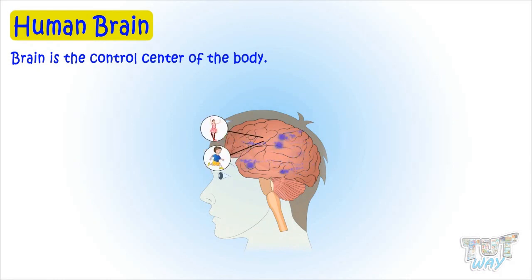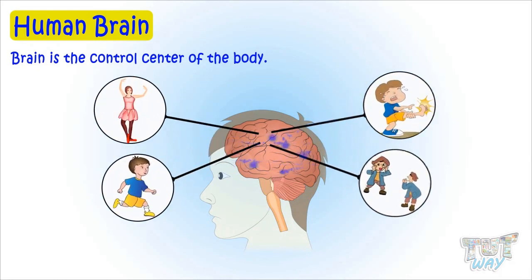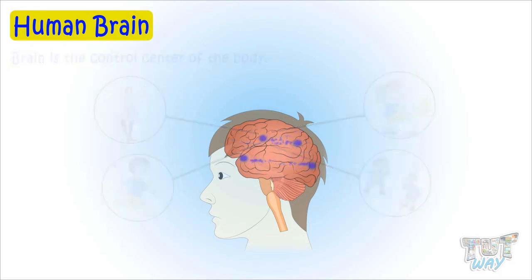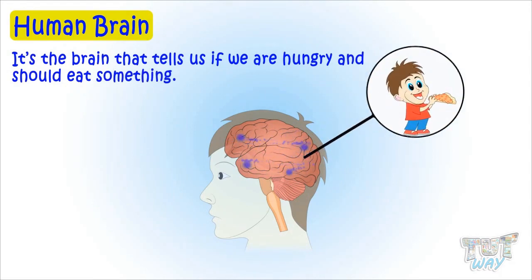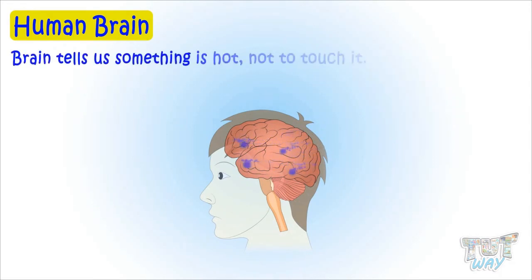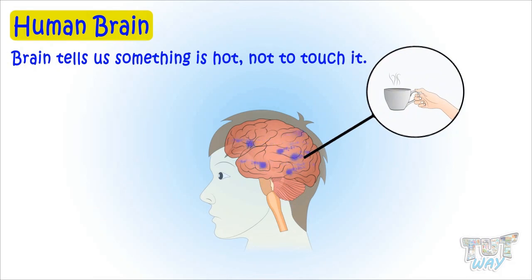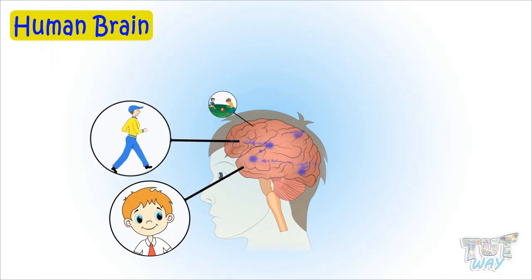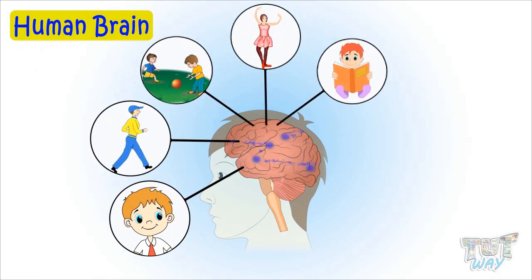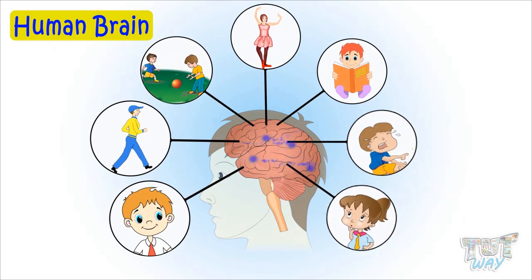The brain is the control center of the body that controls every action and reaction. It's the brain that tells us if we are hungry and should eat something, tells us that something is hot and we should not touch it, and makes us smile, walk, play, dance, read, dream, cry, and imagine.